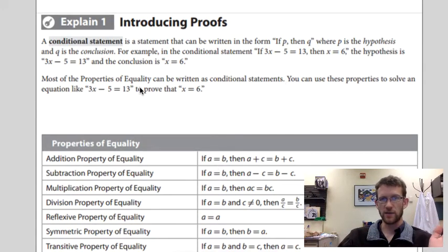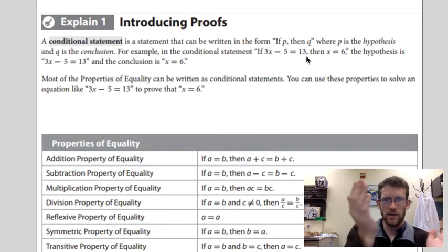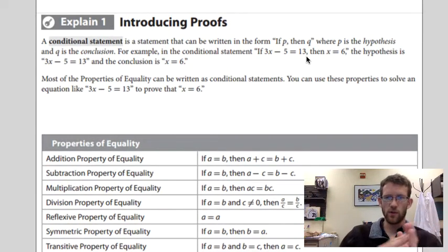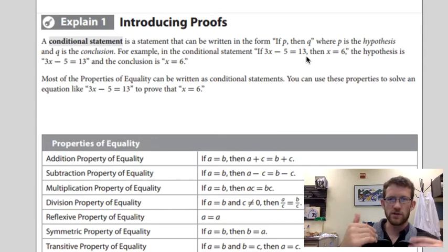If 3x minus 5 equals 13, then x equals 6, right? Yes, it's true that x equals 6, but we want to go a little bit further and instead of just assuming that x equals 6, right, think back to your algebra days, pre-algebra days. How do we get there that x equals 6? Well, we need to do things to both sides of the equation, stuff like that. And so we need reasons for everything we do.